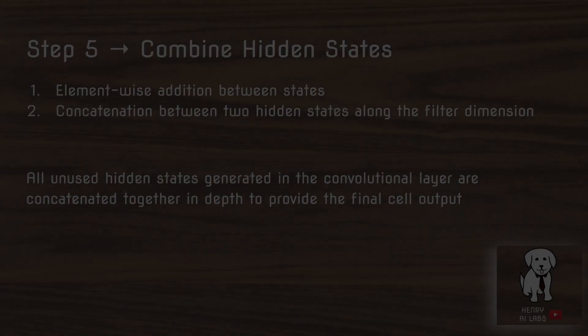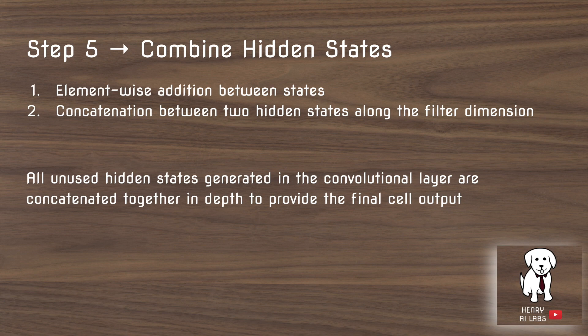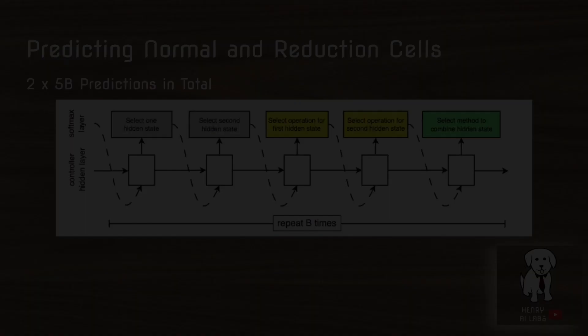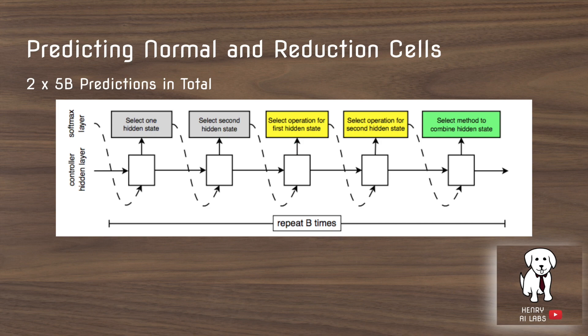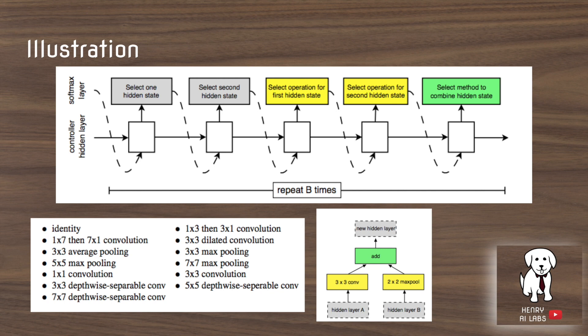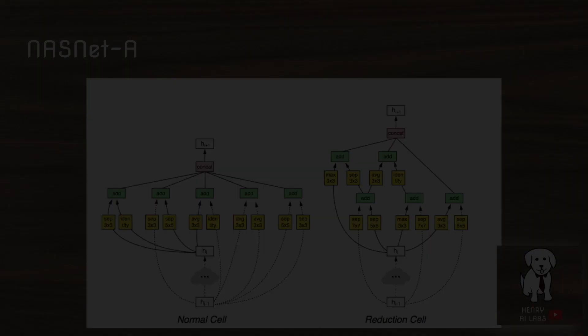After selecting operations for the hidden states, the controller defines a way to combine the outputs — either element-wise addition between the two states or concatenation along the filter dimension. It predicts both normal and reduction cells, making 2×5B predictions in total, where B is the number of internal connections designed within the layer. The illustration shows: select hidden layer A and B, choose two operations for each from the discrete search space, then choose a way to aggregate the new feature maps.